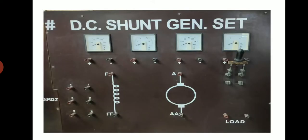The autosynchronous motor is coupled with a DC machine which is here a DC shunt generator where F FF are the field winding of the shunt generator, A double A are the armature windings of the shunt generator and the load terminals are also provided.